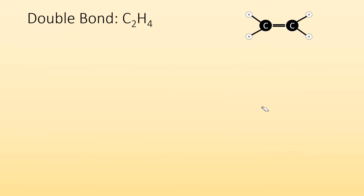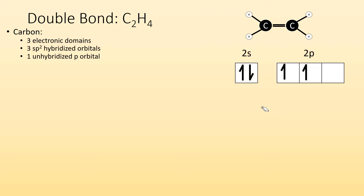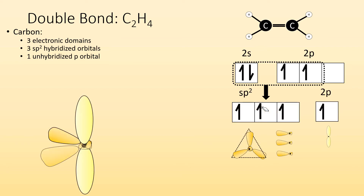So if we take a look at the double bond in C2H4 — carbon has three electron domains, it's bonded to three atoms — which means it's sp2 hybridized. So one of those p orbitals is going to remain unhybridized. This is carbon's electron configuration; to get sp2 hybridized, we end up with one unhybridized p orbital.